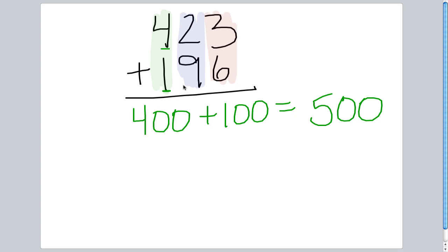In our blue section, our tens place, we have 9 tens and 2 tens, or 20 plus 90, which gives us 110.